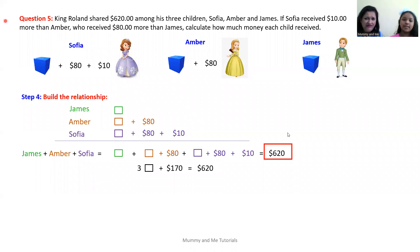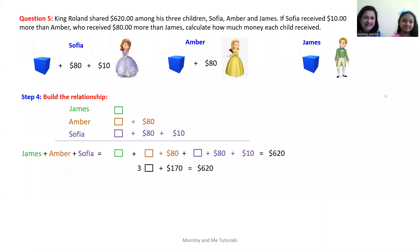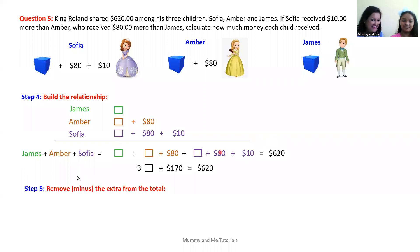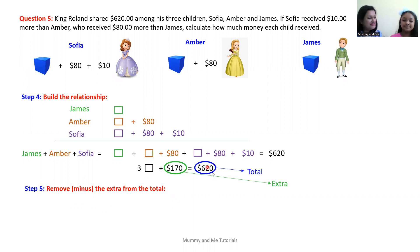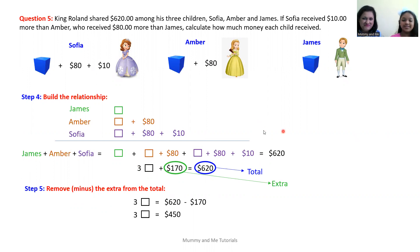Why $620? That is the amount that King Roland shared among his three children — that's the total amount. So our next step, step five: remove or minus the extra from the total. The total is $620, and we minus $170 to find our three shares. So three boxes equal $620 minus $170, which gives us three boxes equal to $450.